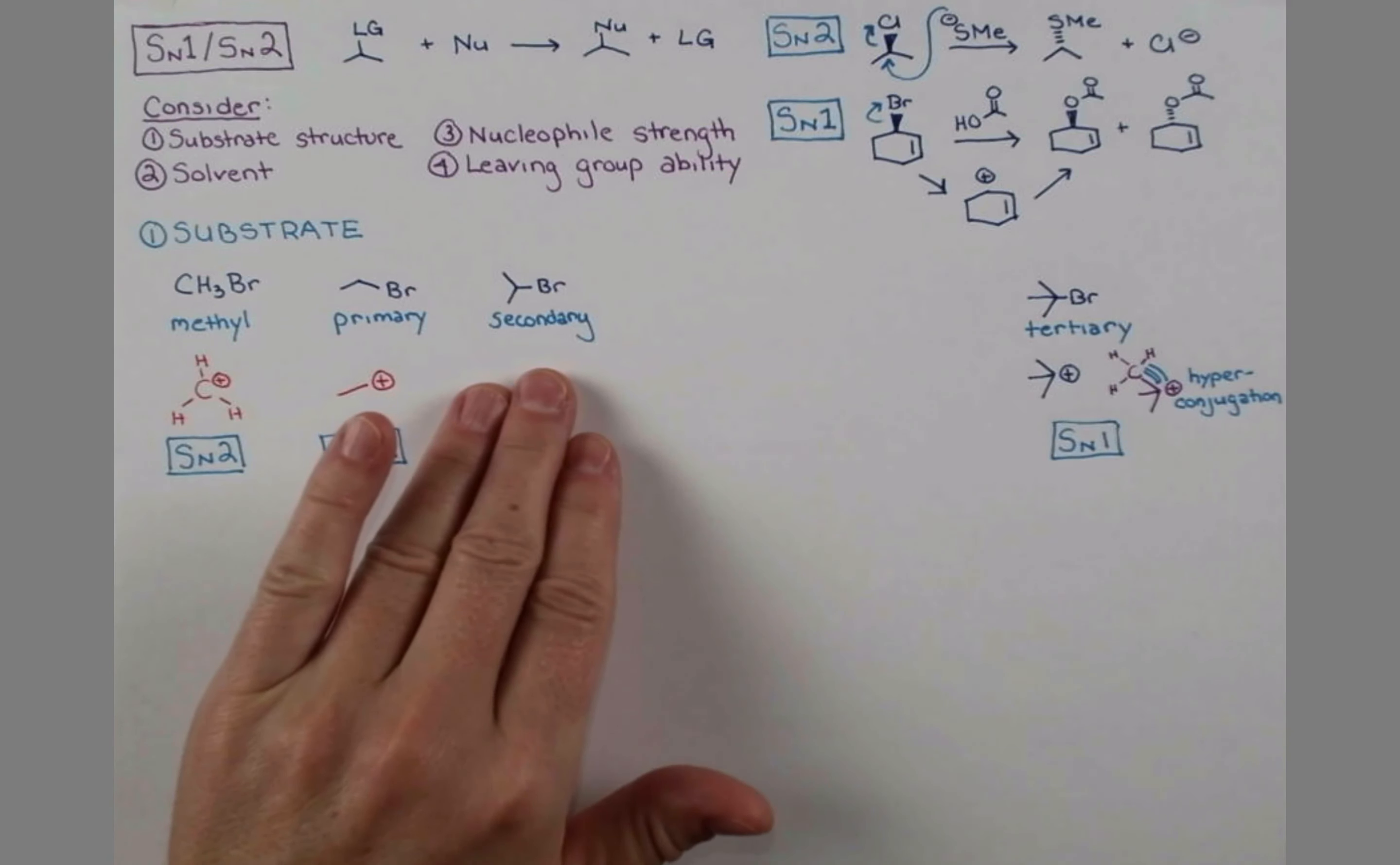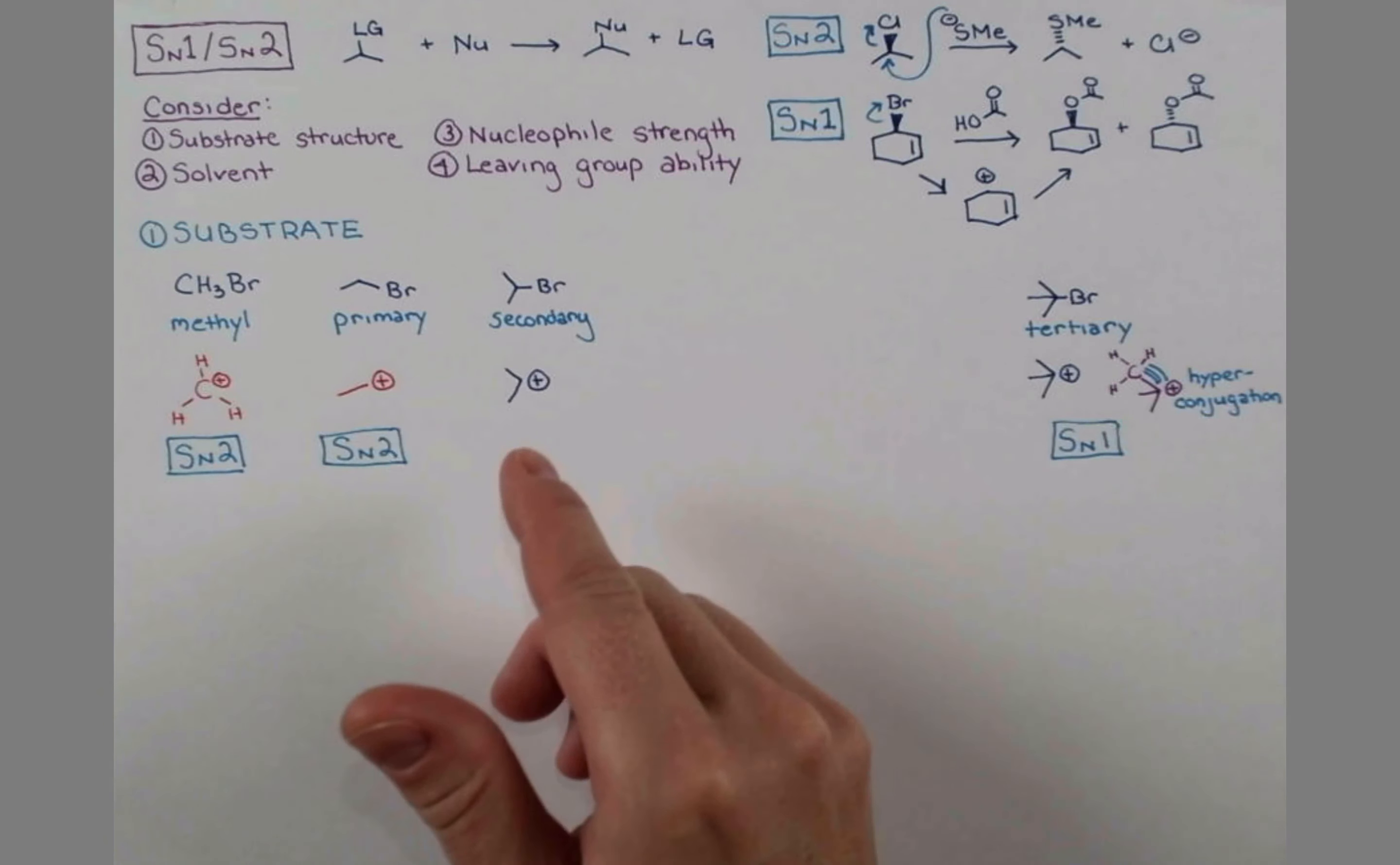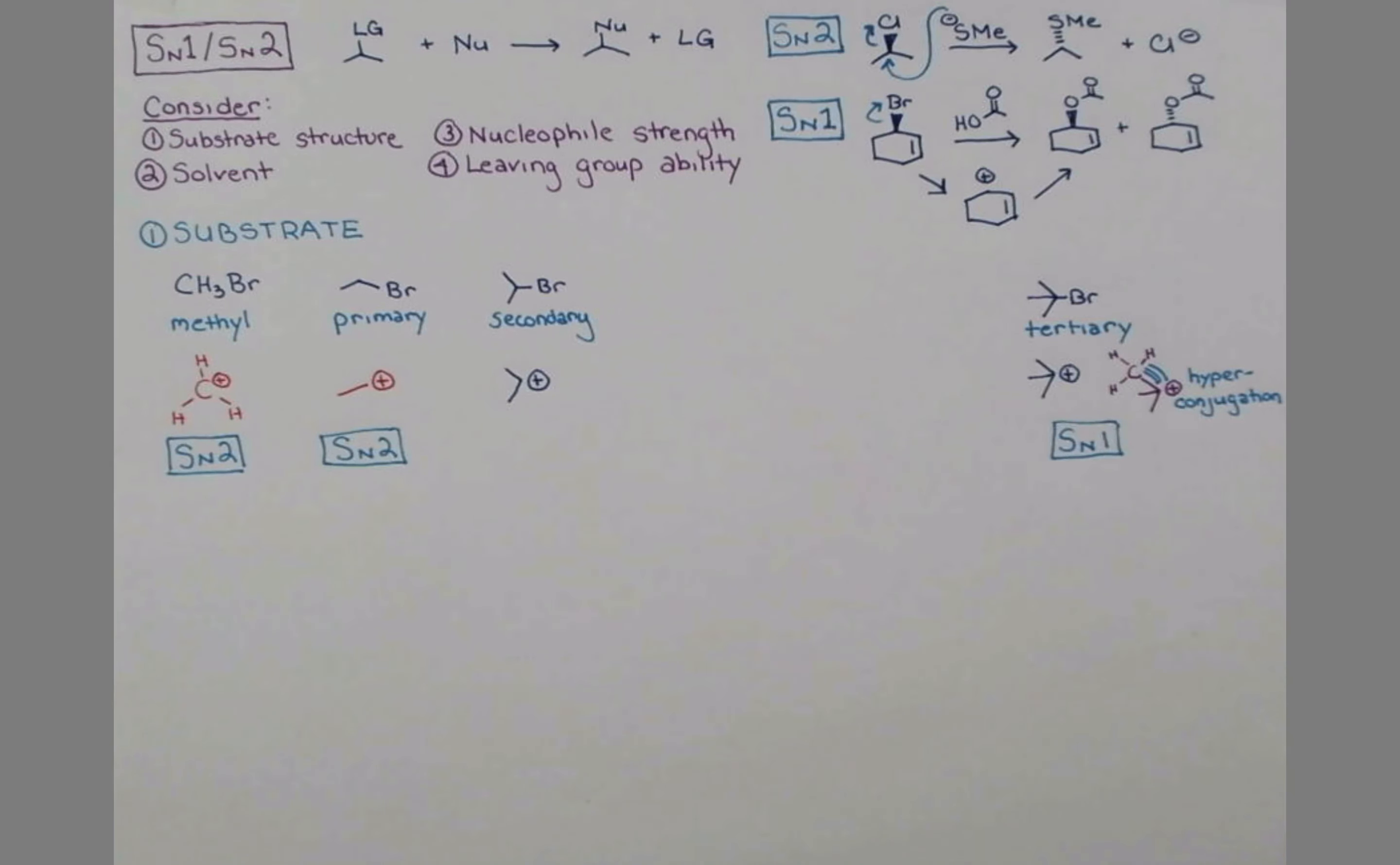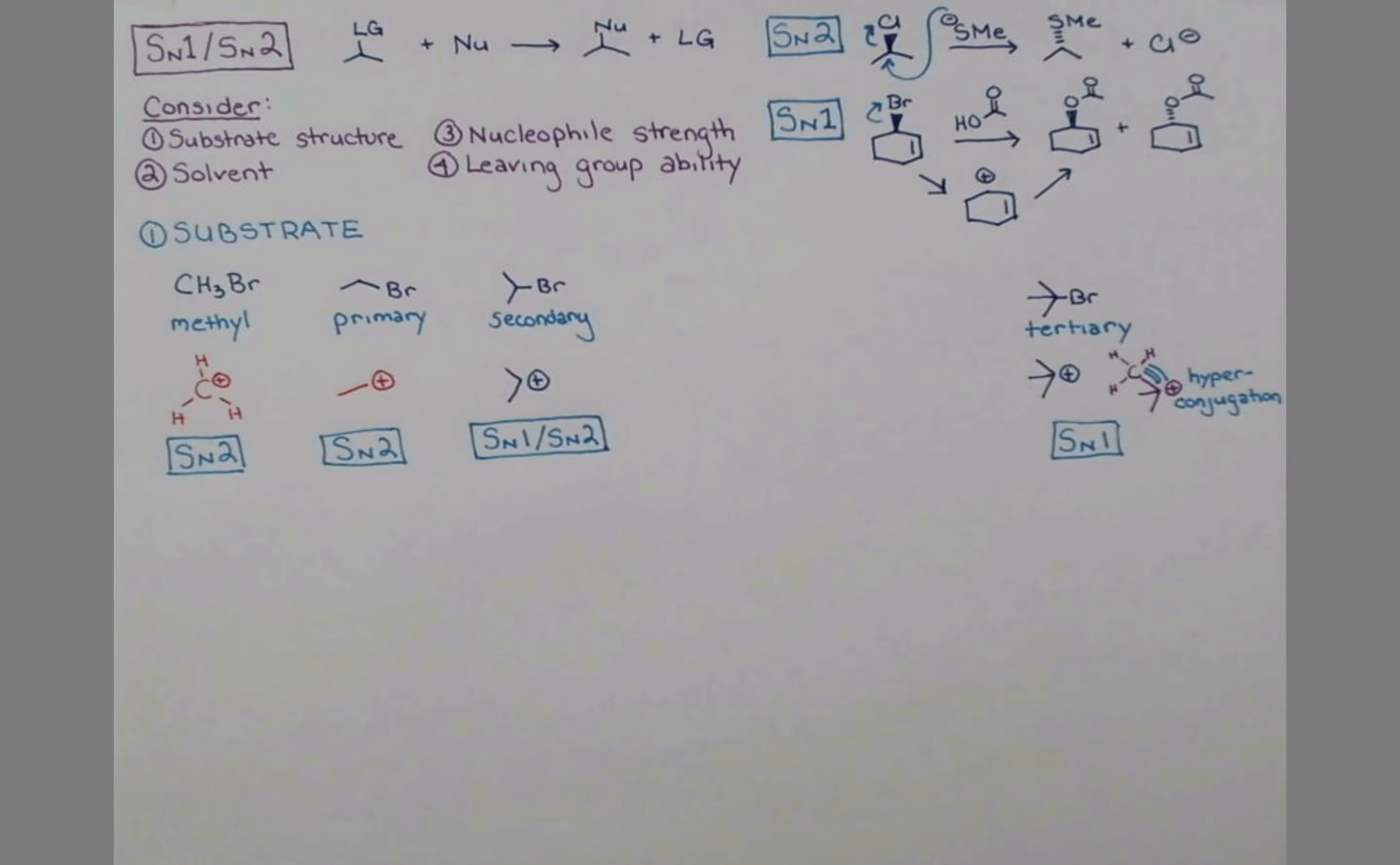Now what about our secondary substrate? The carbocation that it would form looks like this. And if you can guess from me drawing this in blue, it's pretty stable. This is where this chemistry gets a little bit complex. Because even though this simple secondary bromide is very reluctant to undergo an SN1 reaction, this substrate can actually do both under different conditions. So this might go SN1 or SN2 depending on these factors.